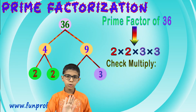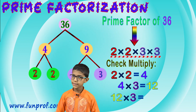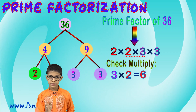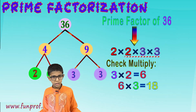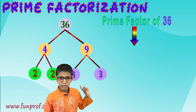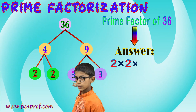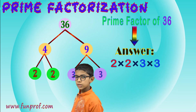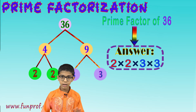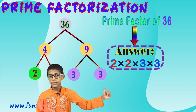We can check it by multiplying: 3 × 3 is 9, 9 × 2 is 18, and 18 × 2 is 36. We can also do it the other way: 2 × 2 is 4, 4 × 3 is 12, and 12 × 3 is 36. We should always check and write the answer. The answer is 2 × 2 × 3 × 3. Without writing the answer, the process is incomplete.